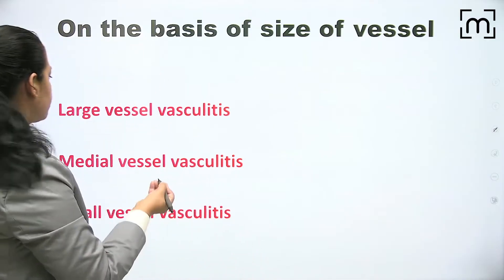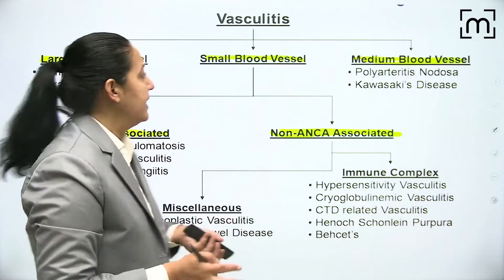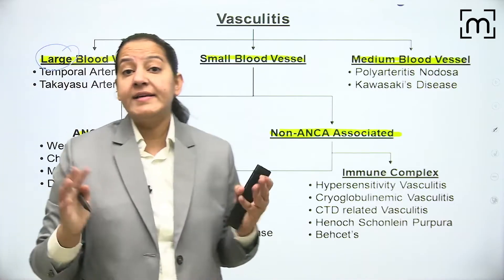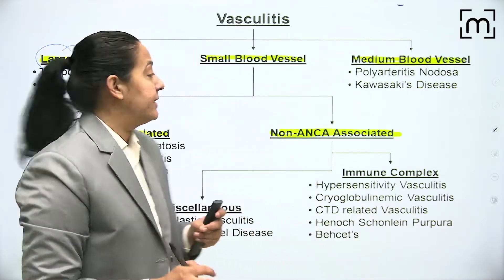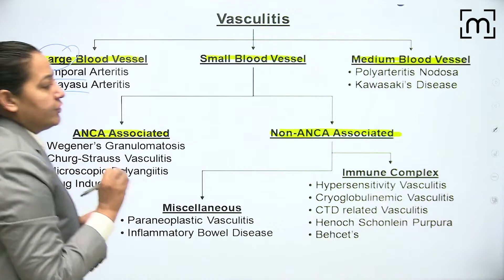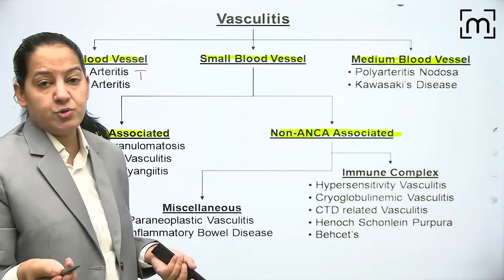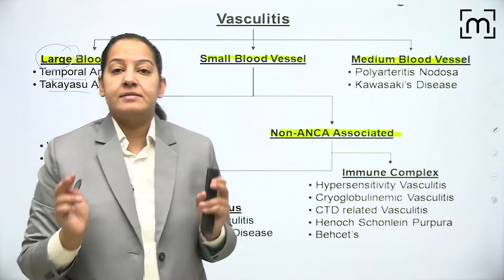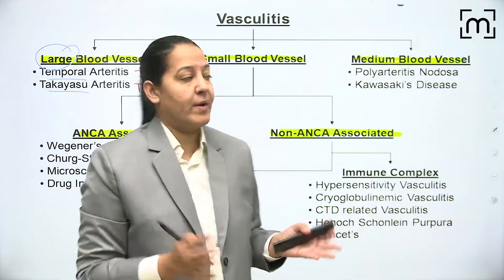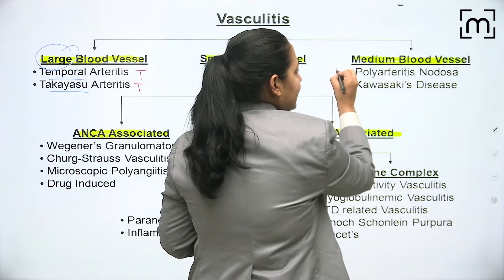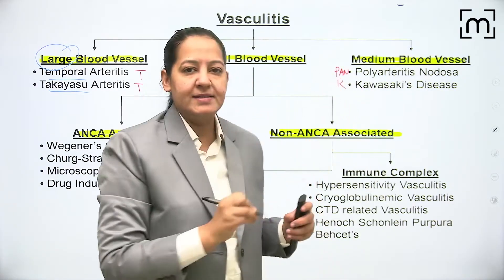Based on the size of the blood vessel, there are three sizes: large, medium, and small. In large vessel vasculitis, basically the aorta or its large arteries are involved. There are only two large vessel vasculitides: temporal arteritis and Takayasu arteritis - you can remember them with the mnemonic T and T. Temporal, also known as giant cell arteritis, and Takayasu arteritis.